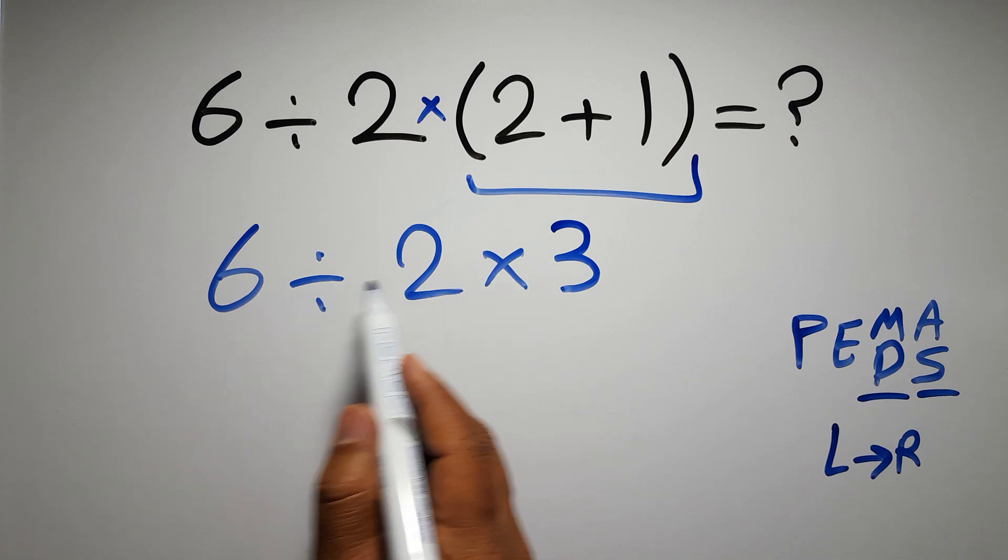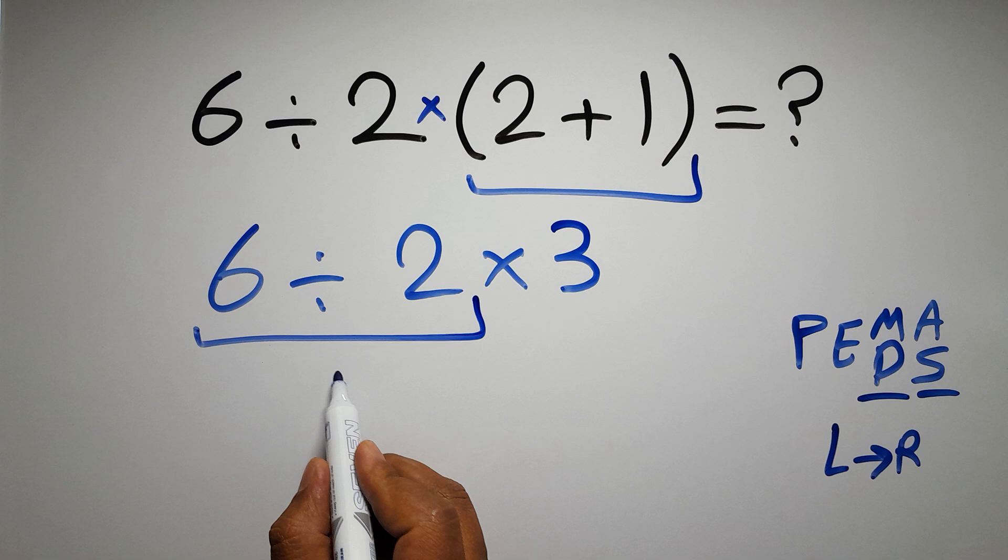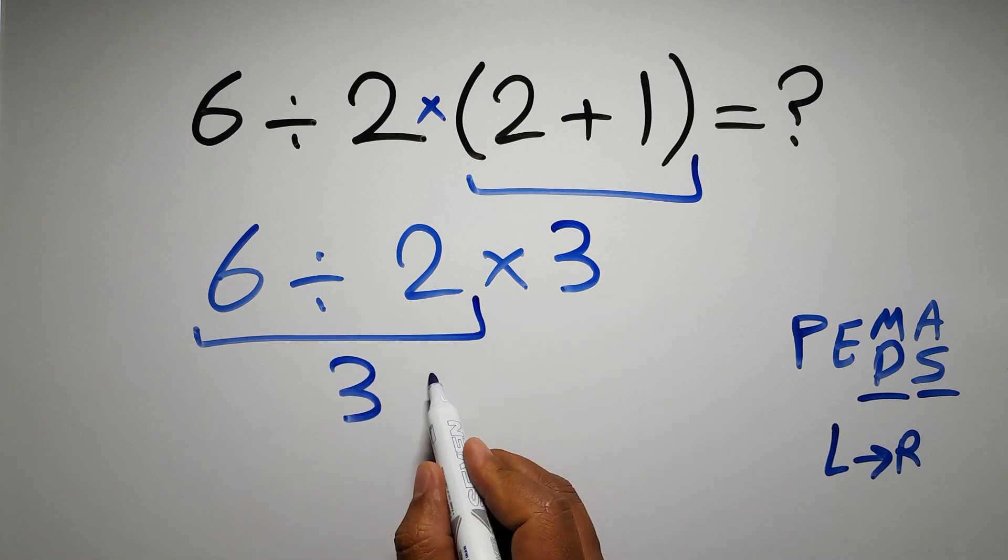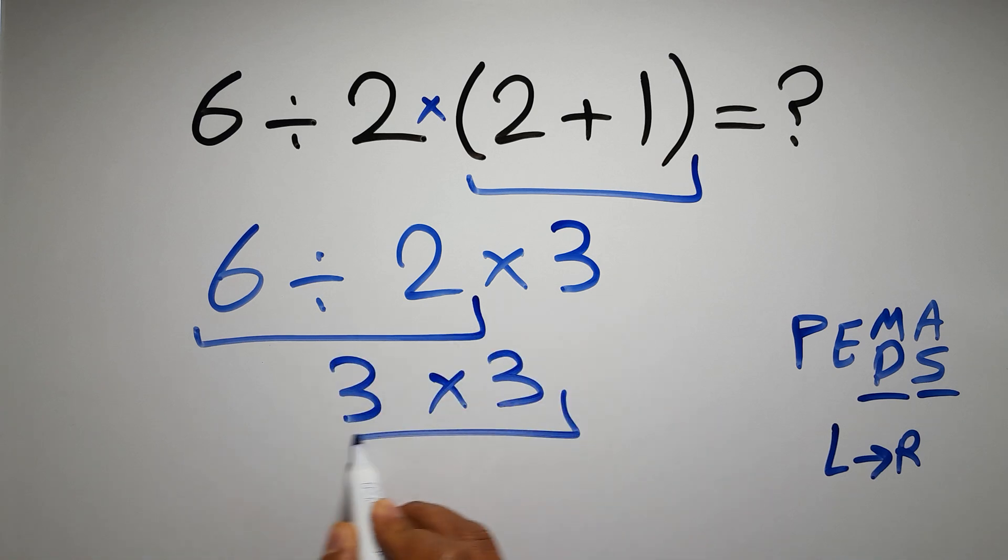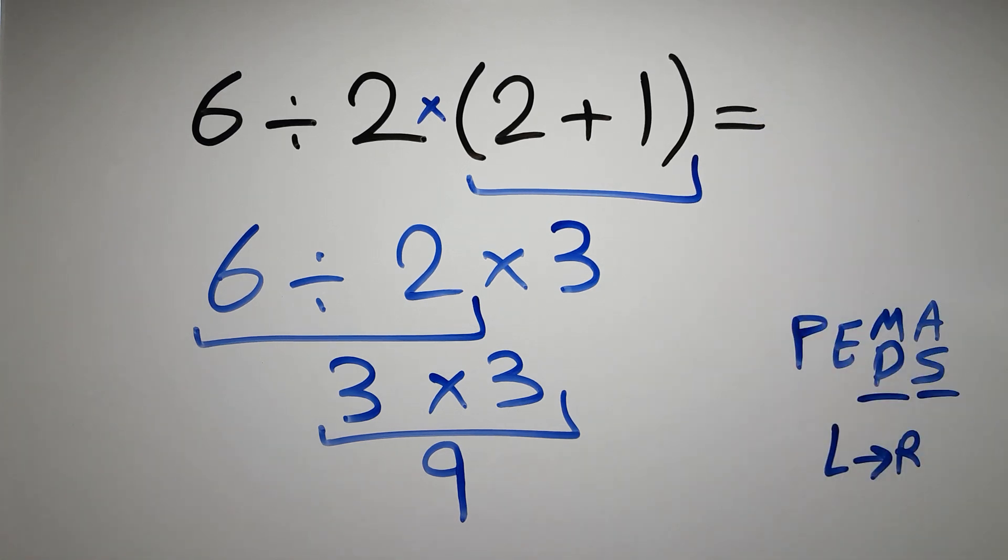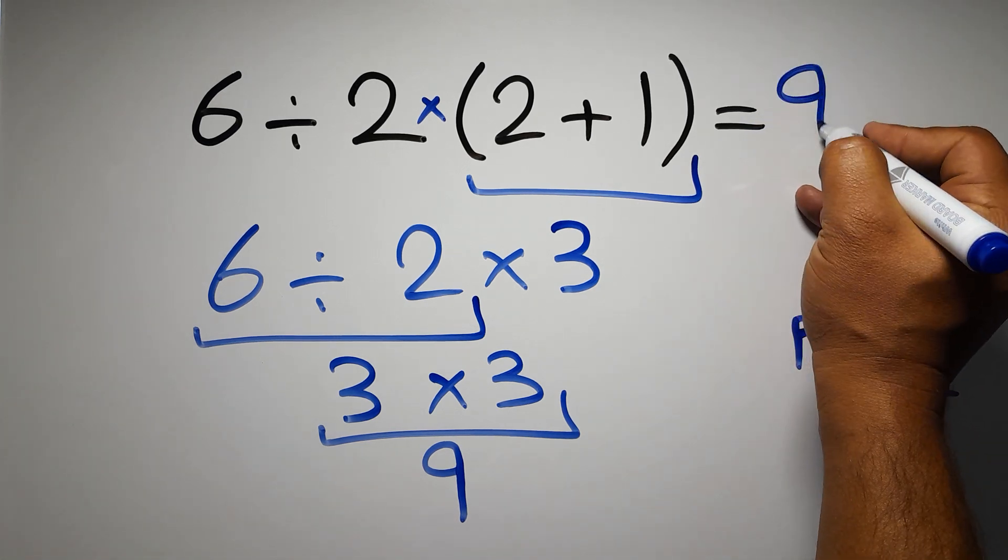6 divided by 2 gives us 3. So 3 times 3, which equals 9. And this is our final answer to this problem. 6 divided by 2(2+1), the correct answer is 9.